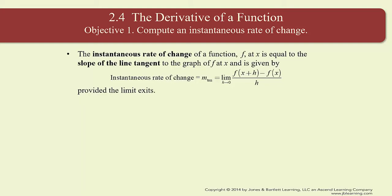Remember, f of x plus h minus f of x all over h gives us an average rate of change — the slope of a secant line through two points on the graph of the function. Putting the limit as h approaches 0 out front means we're letting those two points get as close together as possible, and the secant line becomes a tangent line. The units of measure of the instantaneous rate of change are units of f per units of x — it's the word 'per' that's important. It's a rate, like miles per hour or dollars per year.